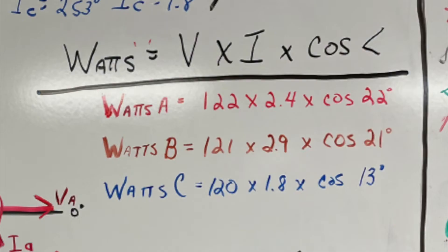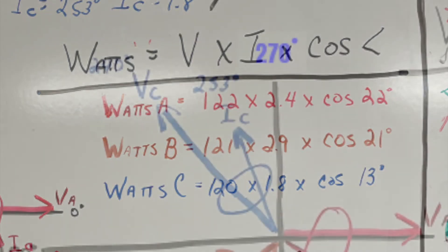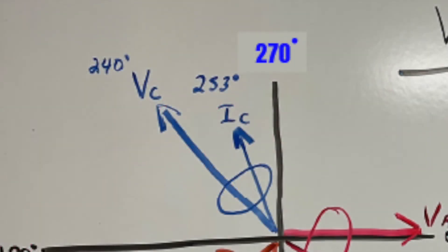Now we're going to go to phase C, we have a given value of 120 volts times 1.8 amps times the cosine of 13 degrees. On C, current, it is lagging the voltage by 13 degrees.